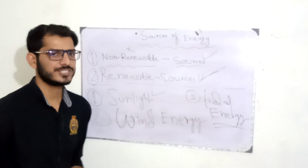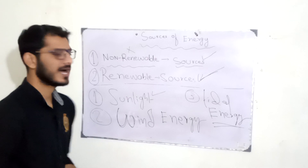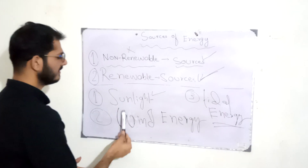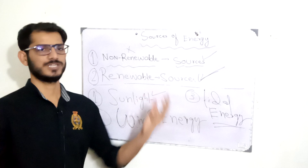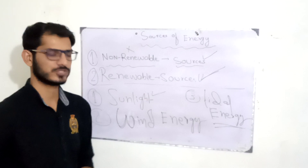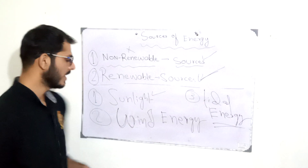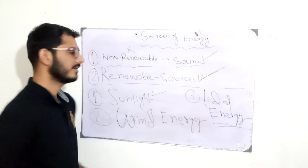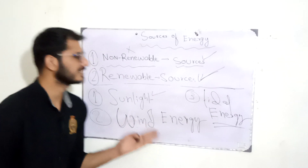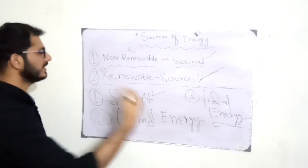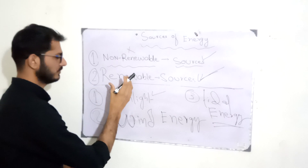We can say that those sources of energy which we can use again and again are renewable sources of energy. Sunlight is renewable as long as the sun is alive. Wind energy is also a renewable source of energy. Holistically, we have understood the concepts of renewable and non-renewable sources of energy and what the difference is between them.